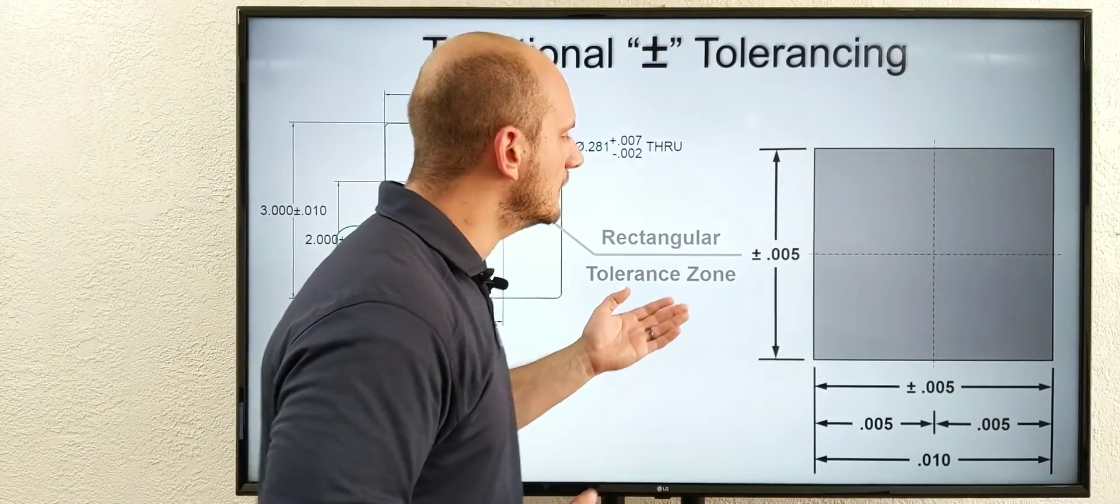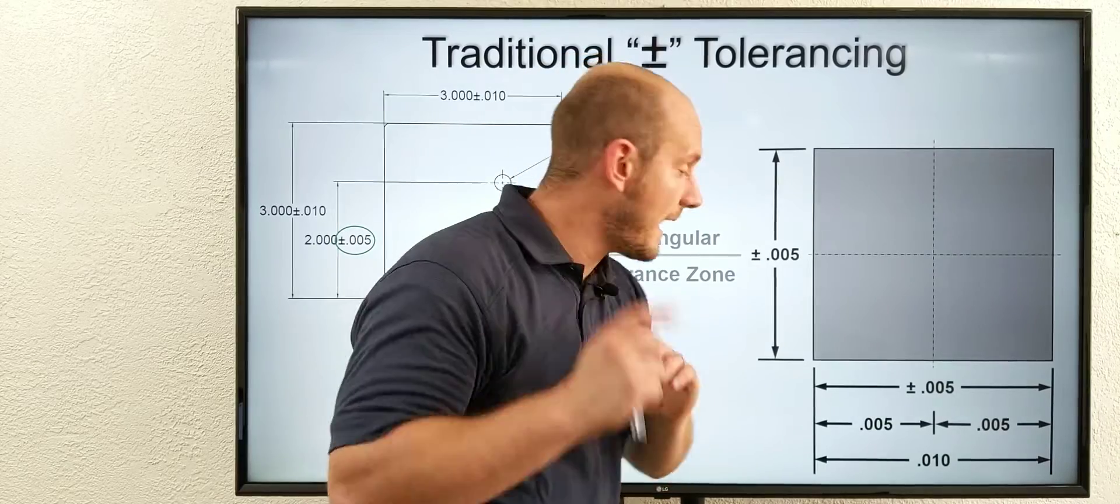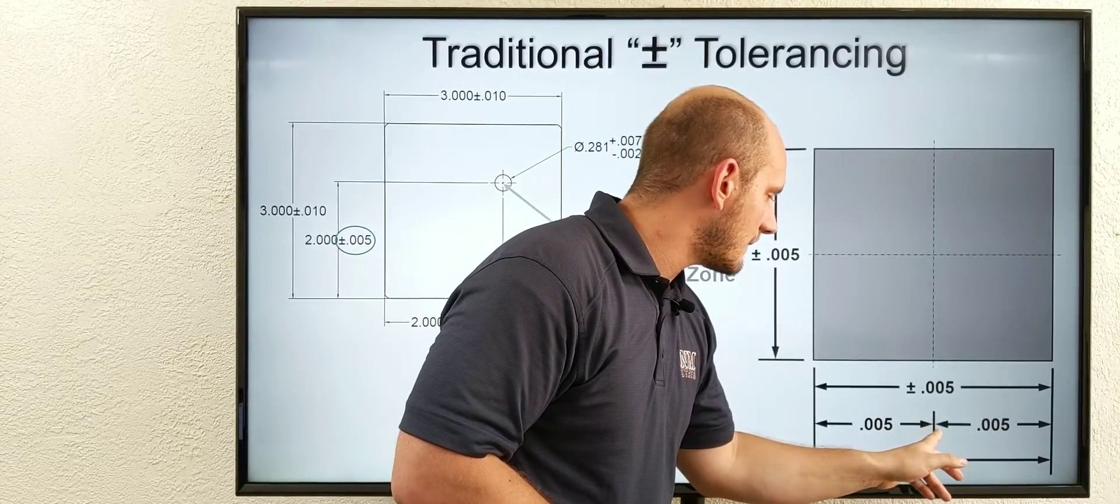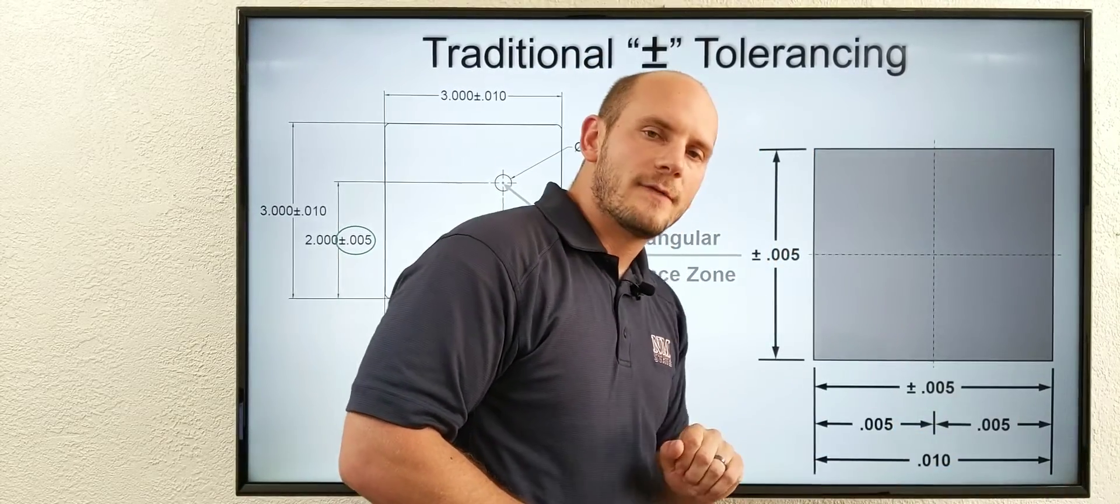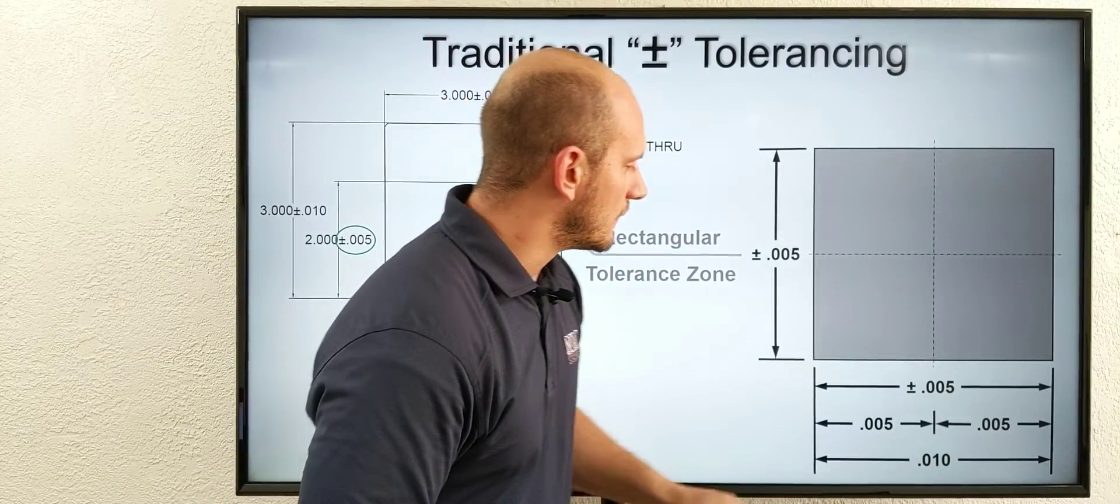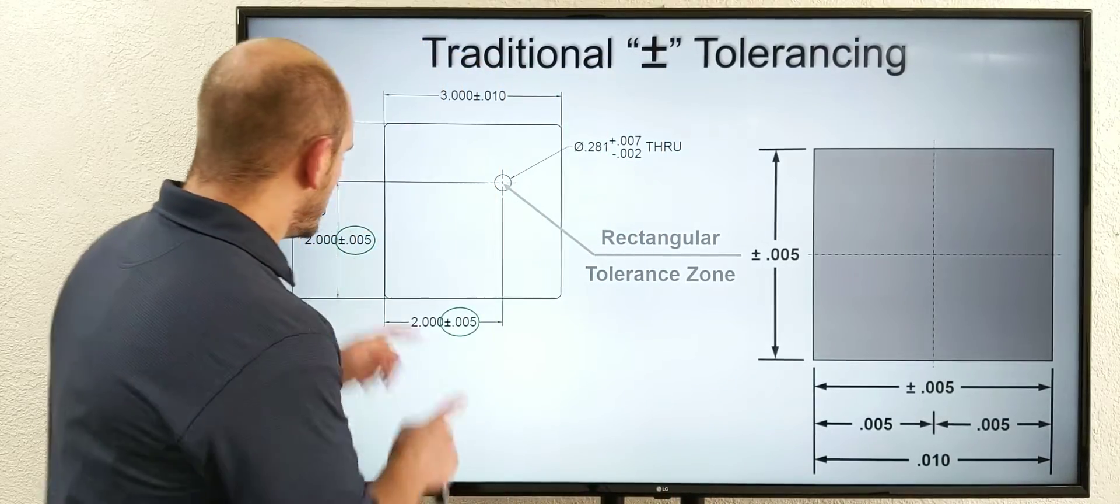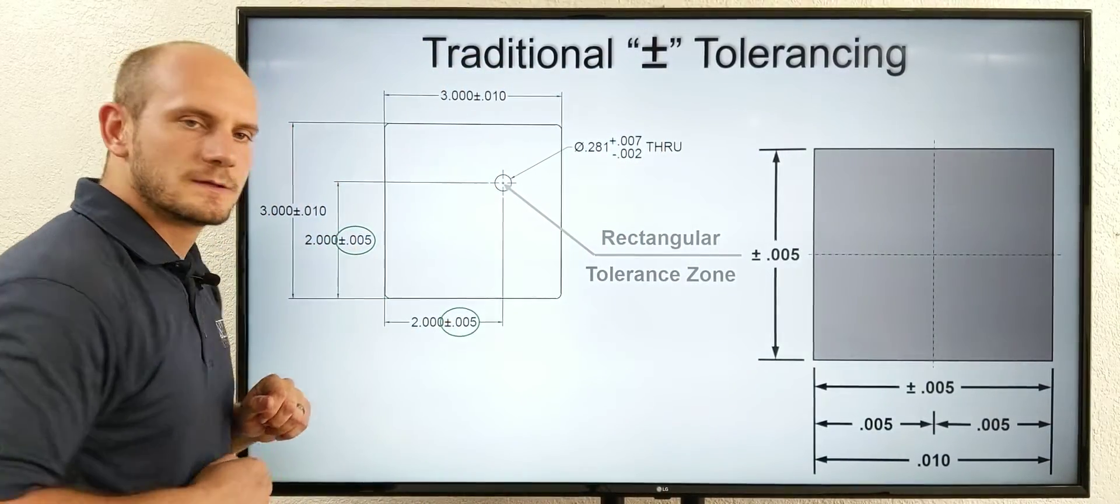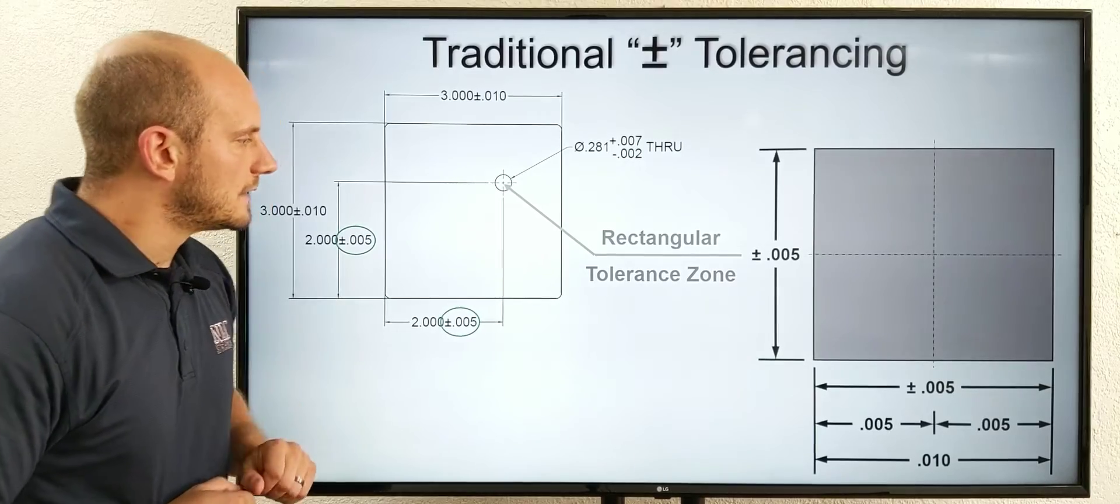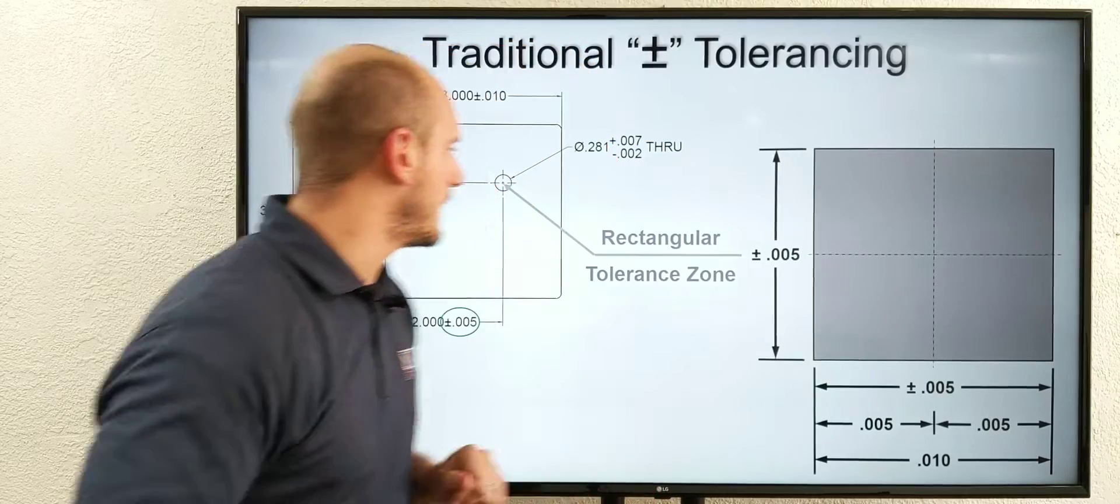It's a rectangular tolerance zone that's plus or minus five by plus or minus five. We know plus or minus five is an upper limit of 5,000 and a lower limit of 5,000, so in reality the total size is 10,000. By invoking plus or minus five on these location dimensions, it's really a rectangular tolerance zone that's 10 by 10.